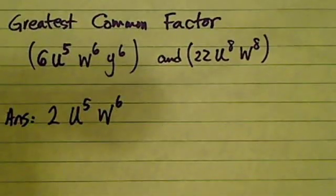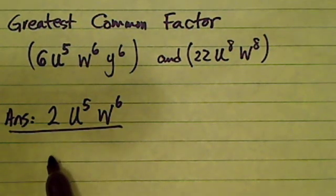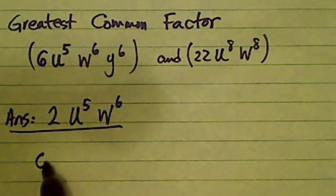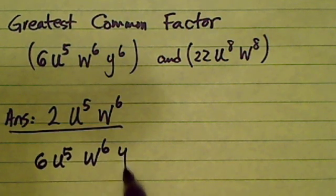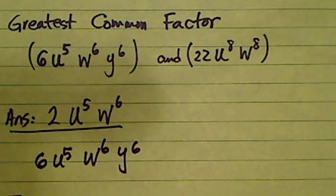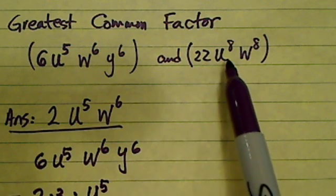Finding the greatest common factor for this problem. The answer is here, and how you get the answer is this way: you break each one of the terms down. 6u^5w^6y^6, and 6 is really 2 times 3. Then u^5 you leave it because u^5 compared to u^8